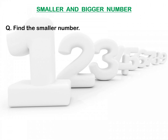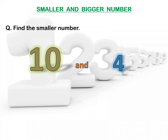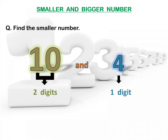Now, let us try one more question. In this, you have to find out the smaller number. The numbers are 10 and 4. Look at the number 10 — 1 and 0 came together to make 10, so 10 is a two-digit number. But what about 4? Just a single digit, so 4 is a one-digit number. One thing to keep in mind is that the number with fewer digits is smaller. So, in this question, 4 has fewer digits, and therefore 4 is the smaller number.